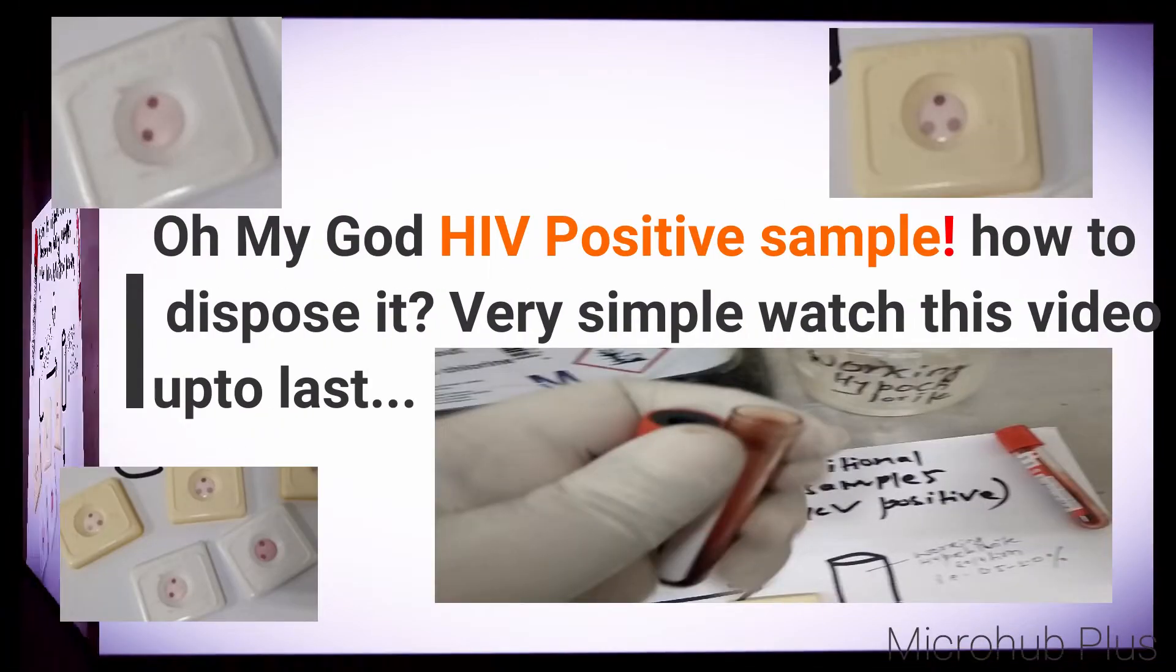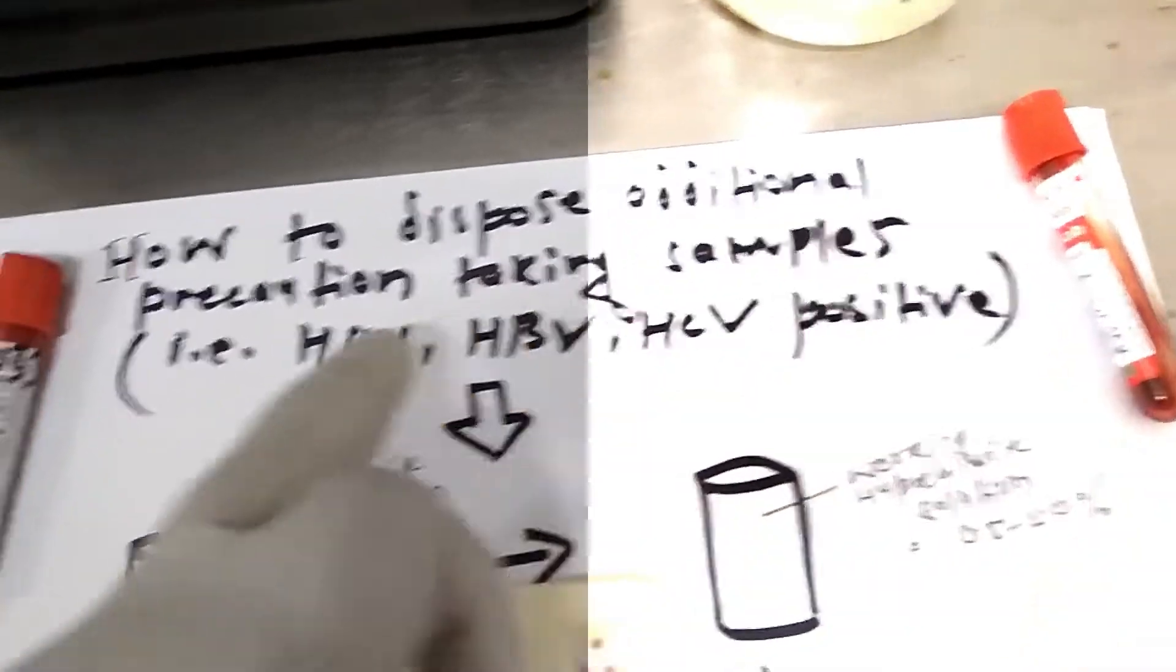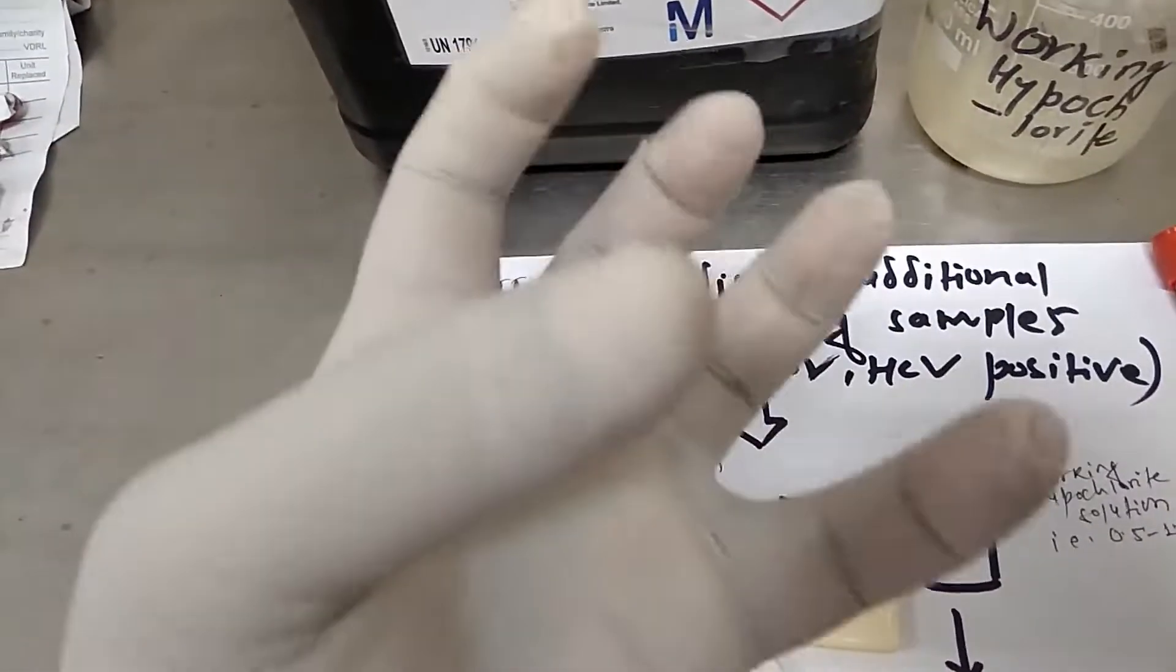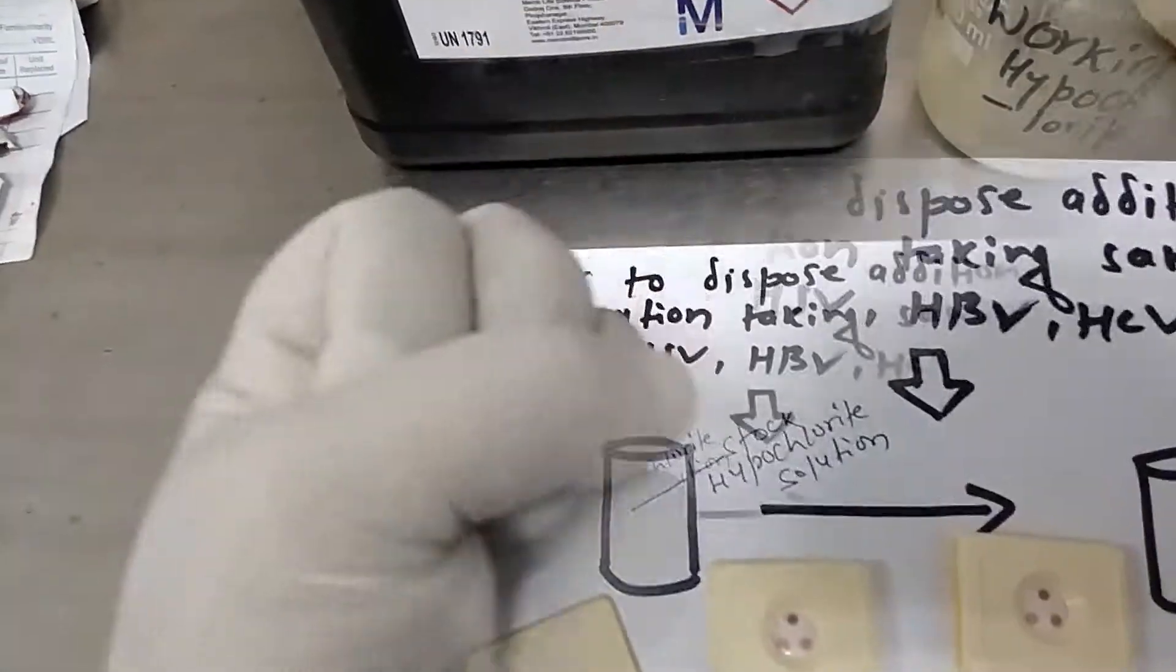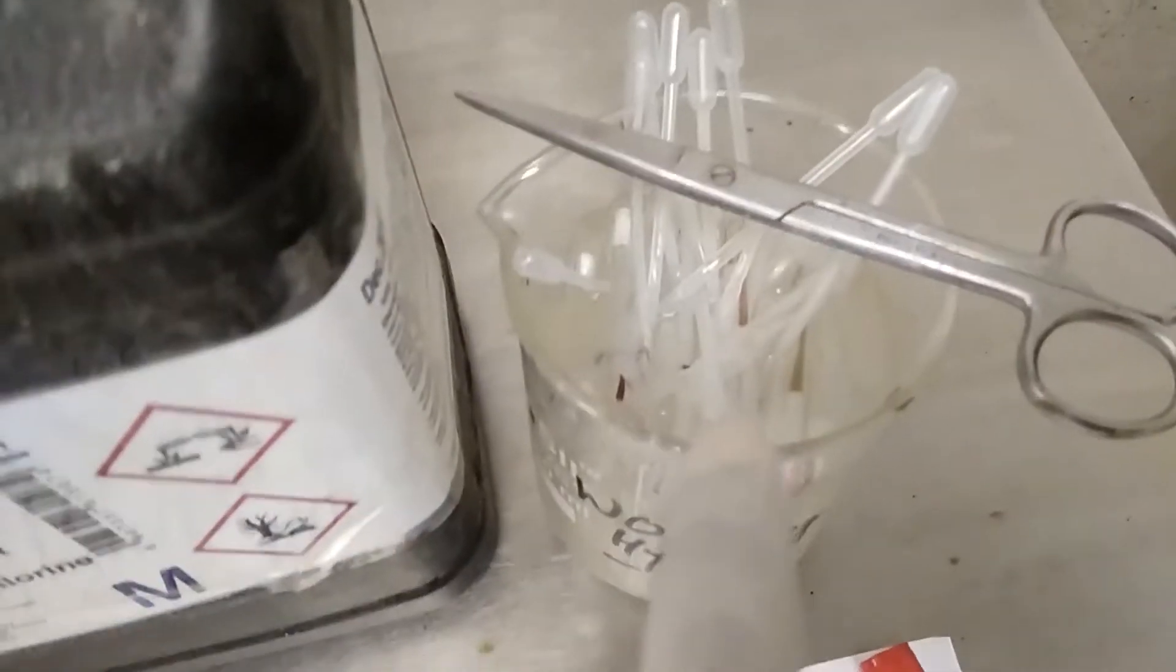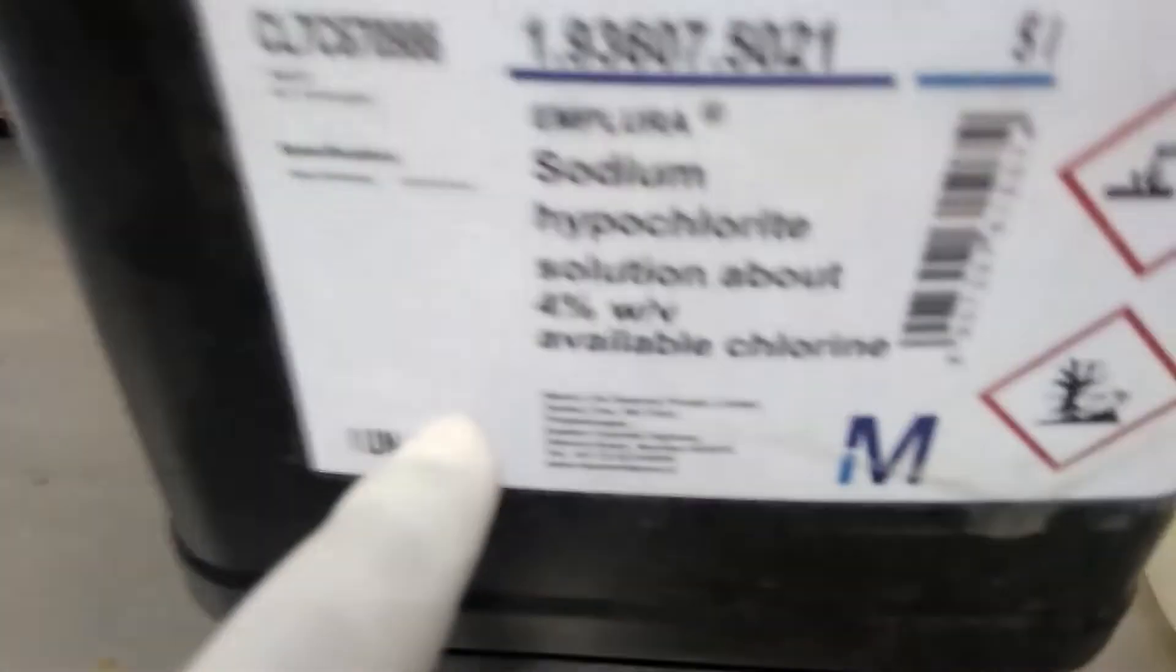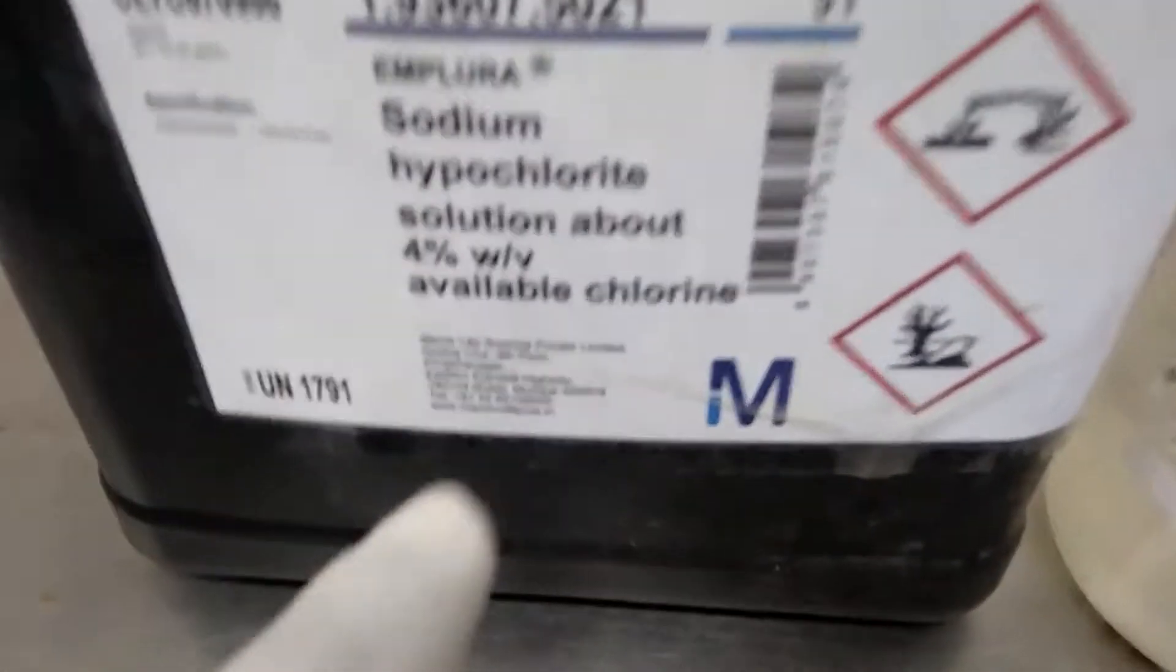Hello everyone, today we are concerned with how to dispose additional precaution taking samples - that is HIV, hepatitis B virus, hepatitis C virus positive samples. Don't worry about it because every laboratory has concentrated sodium hypochlorite solution. Wear gloves and first prepare 0.5% working sodium hypochlorite solution. Link given in description. So now we can see here.